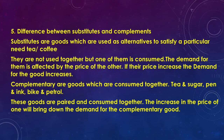The next question is the differences between substitute goods and complementary goods. Substitutes are goods which are used as alternatives to satisfy a particular need — example: tea or coffee. They are not used together; any one of them is consumed. The demand for them is affected by the price of the other — if the price of one increases, demand for the substitute increases and vice versa. Complementary goods are goods consumed together — like tea and sugar, pen and ink, bike and petrol. These goods are paired and consumed together, and an increase in the price of one will bring down the demand for the complementary good.